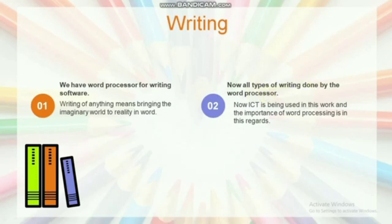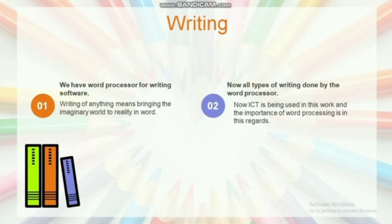ICT is being used in this work, and this is the importance of word processing. We have word processor for writing, and this software can be used on our desktop, laptop, and smartphone. The story of human beings started with the art of writing — writing to communicate their thoughts and ideas, and convey their imagination to others.